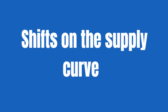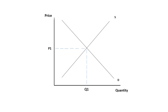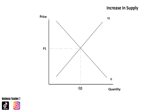Now on to shifts on the supply curve. Again, we start with the X. For this part of the video we're focusing on the supply curve. First, an increase in supply — we're only making changes to the supply curve. We bring in a new supply curve and label it S2; it can't also be called S1. We include the new equilibrium and label it P2 and Q2. That's an increase in supply — straightforward.